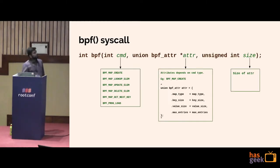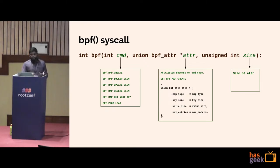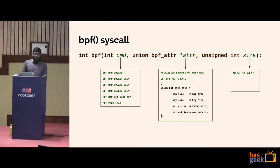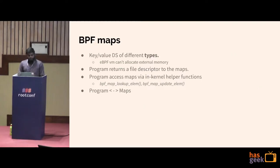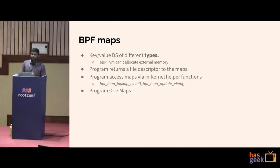The BPF syscall lets you load programs and create maps, taking attributes such as program type, map type, key size, and so on. Maps are key-value data structures with various types: hash, per-CPU arrays, perf arrays, histograms, stacks, and more.